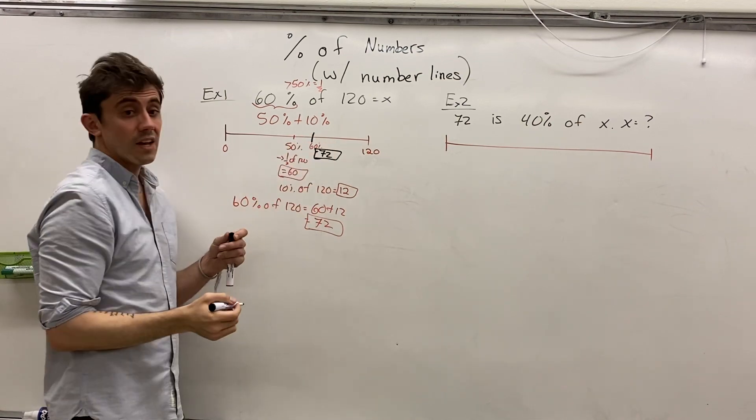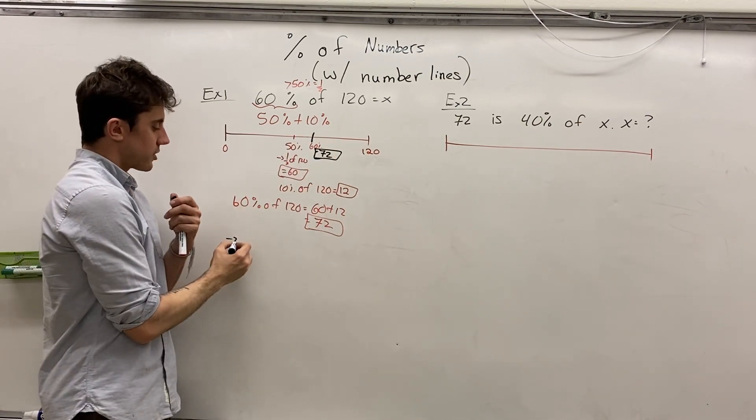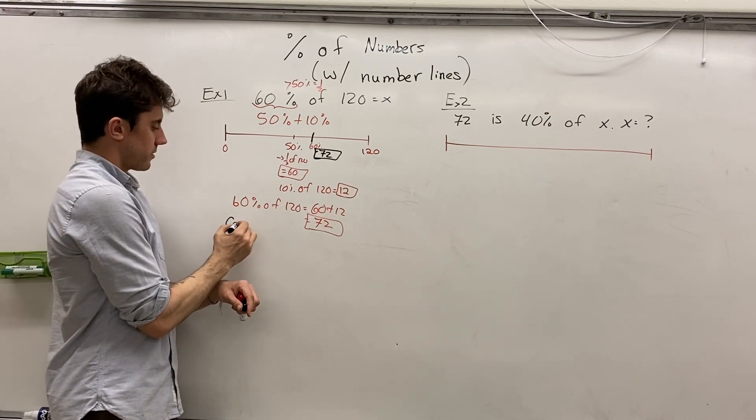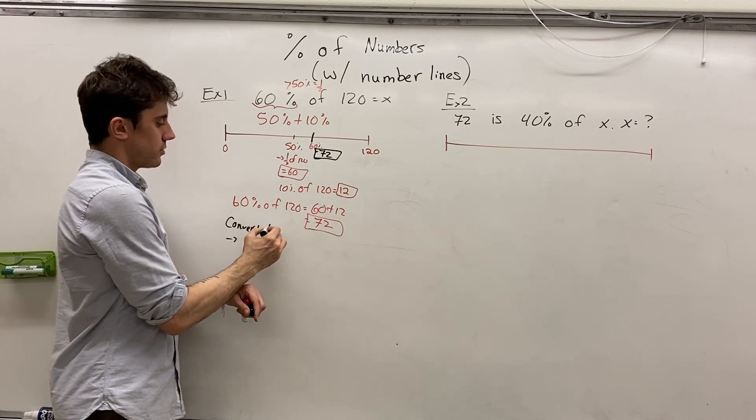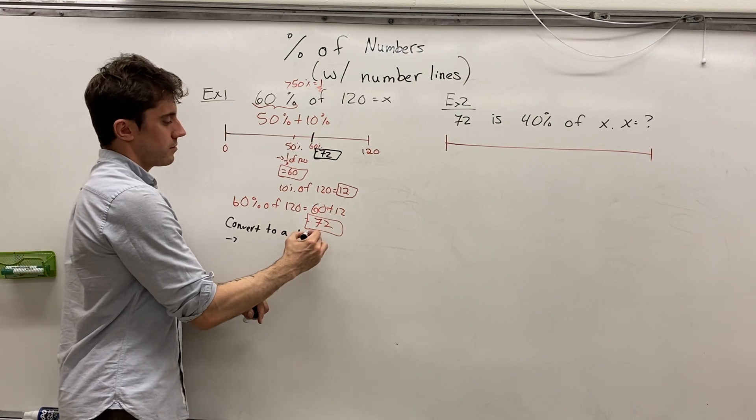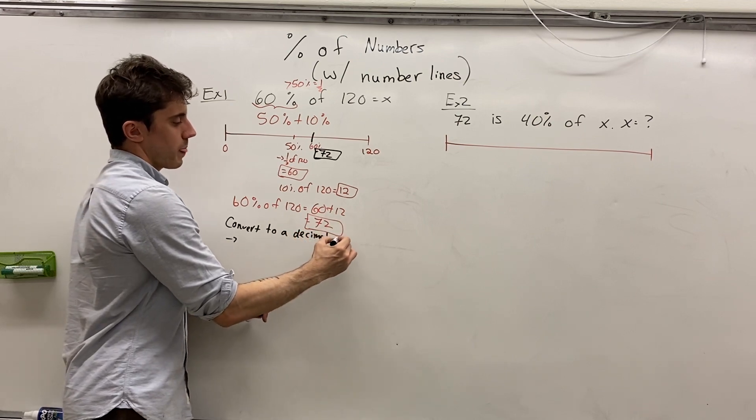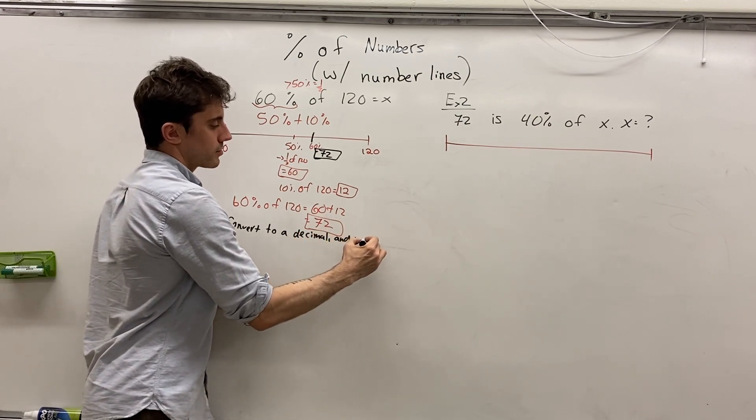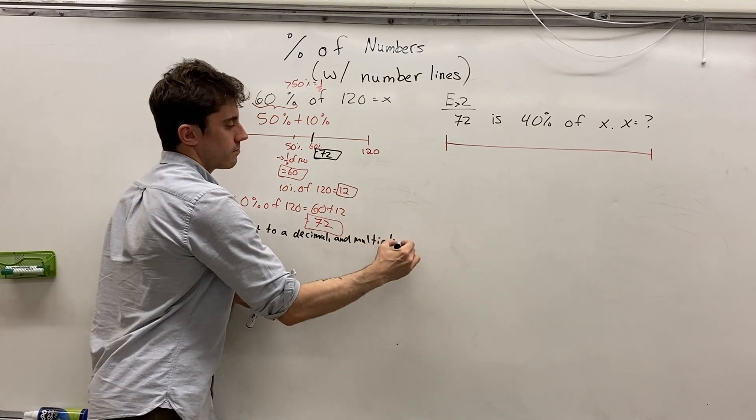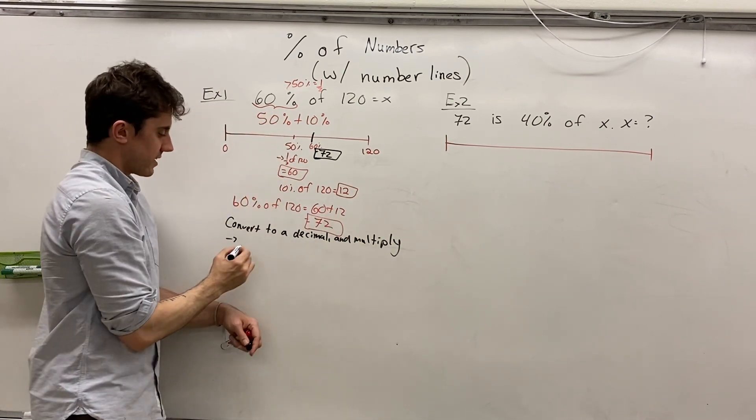Another quick and easy way is to convert to a decimal. So convert to a decimal and multiply. So if we convert 60% to a decimal, 60% as a decimal is 0.6.